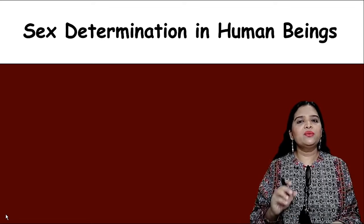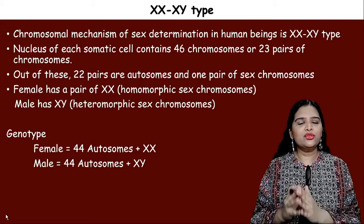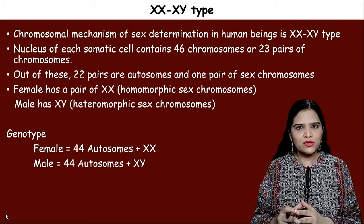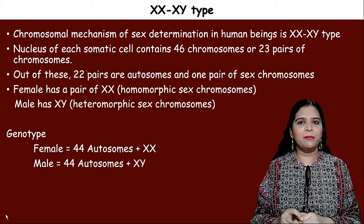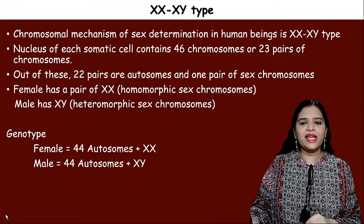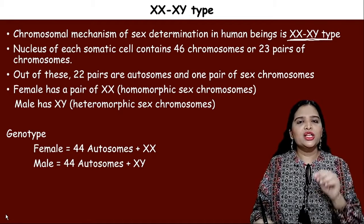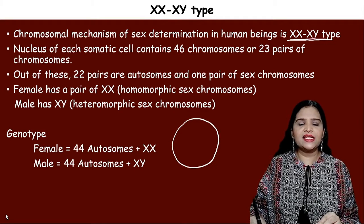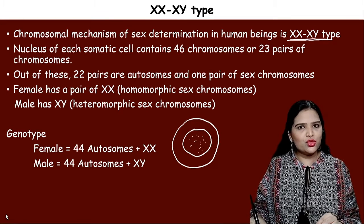In our previous lesson we studied how sex is determined in organisms through chromosomes called sex chromosomes. Sex chromosomes determine the sex of an organism by four different methods. One of these methods is the XX-XY type of sex determination, which occurs in human beings. This chromosomal mechanism of sex determination is called the XX-XY type.